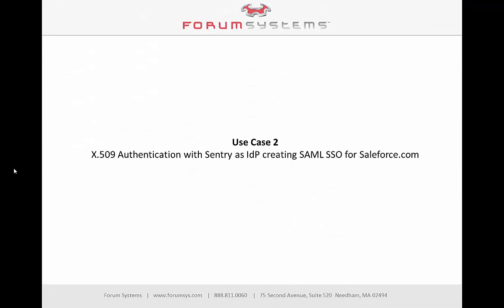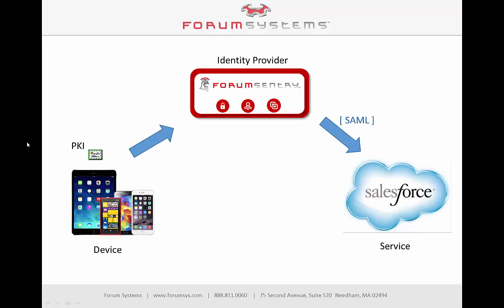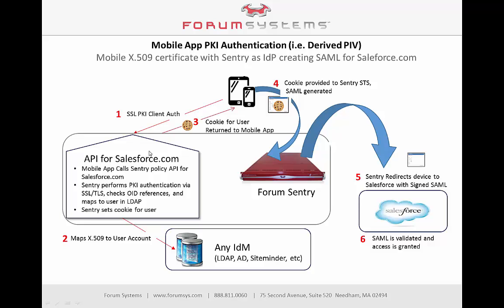For use case two, we'll do X509 authentication with Sentry behaving as an identity provider, enabling SAML 2.0 single sign-on for Salesforce.com. Using a web browser as the client — simulating an app on a mobile device — we make a call into Sentry with an X509 cert, Sentry validates the cert, and then redirects with a SAML to log the user into Salesforce. Sentry makes an LDAP call to Active Directory to map the cert to a user, grabs the email address of the user record associated with the X509 cert, and stores it with the generated cookie. Sentry then redirects the client to an STS policy that consumes the cookie for authentication, generates a SAML including the email from AD, and redirects the client with the SAML to Salesforce.com. Since Salesforce and Sentry have a pre-existing trust relationship, Salesforce validates the SAML and logs the user in based on the email attribute included in the Sentry-generated SAML.